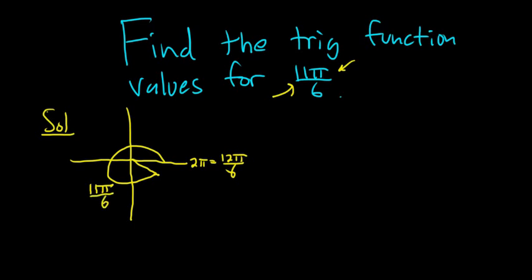So the reference angle is the positive acute angle made with the terminal side of our angle and the x-axis. So that's going to be this angle here. So to get from 11 pi over 6 to 12 pi over 6, it's pi over 6.